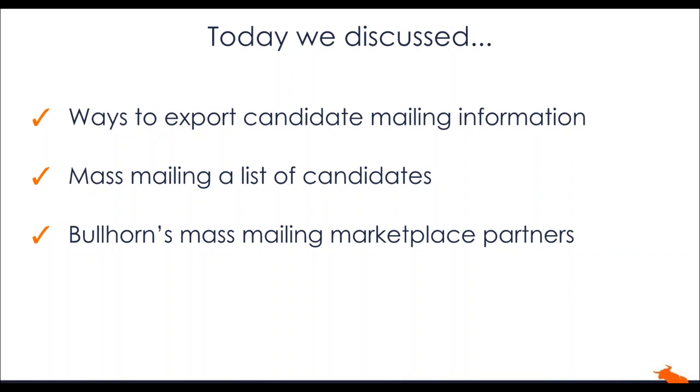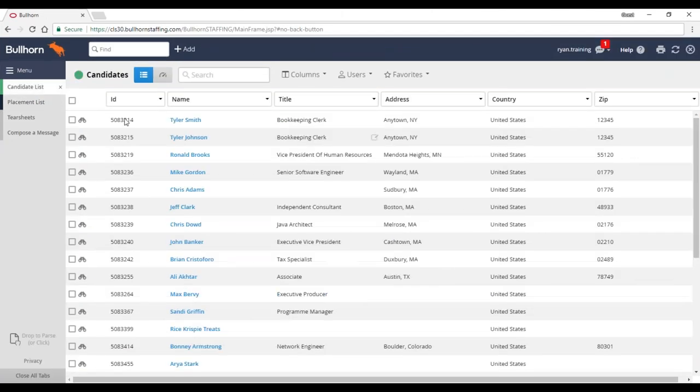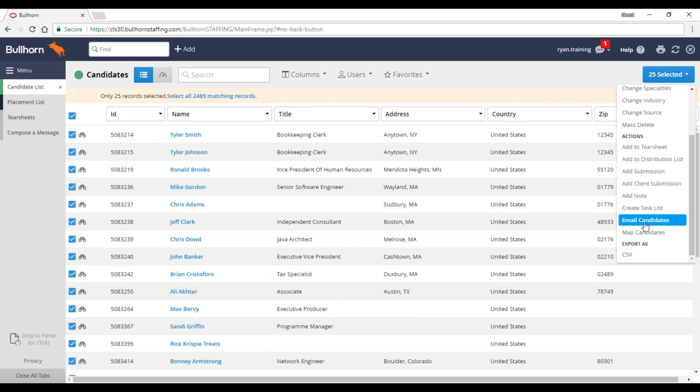The first question: why can't mass emails be sent from a tear sheet or from the list view? As I mentioned earlier, from any list view you have options to shoot off an email to candidates — it's about the size of the mass mailing. If you're doing five or six candidates, by all means use the email candidates button. But if you're doing a larger campaign, you want to use a distribution list or tear sheet to keep track of that information and to be notified about any records missing email addresses.